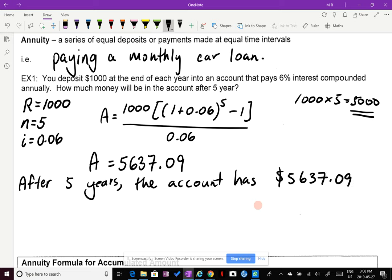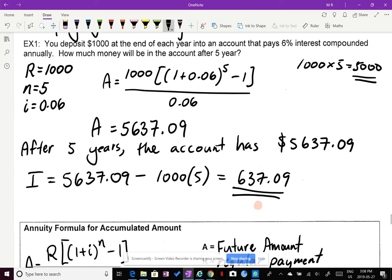What if I ask how much interest was earned over that time? Well, the amount of interest earned is just the total amount in the account minus the money you put in. So you put in $1,000 every year for five years. So the difference between $5,000 and the $5,600 is just the $637.09. That's how much interest we've earned over five years.